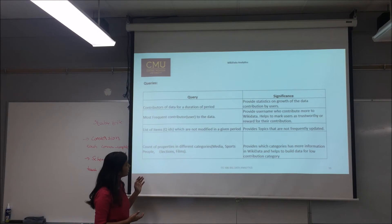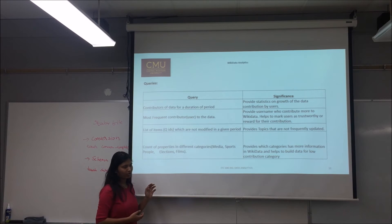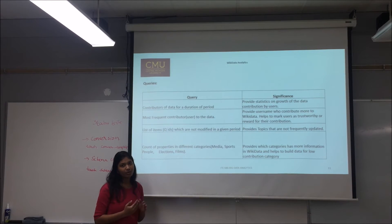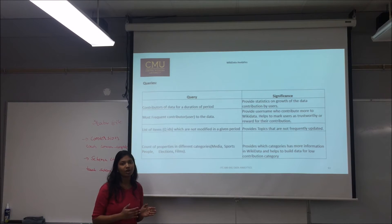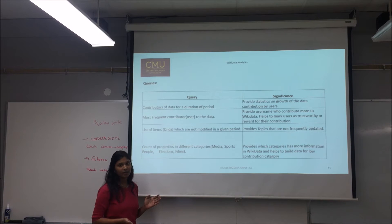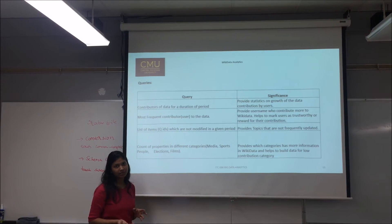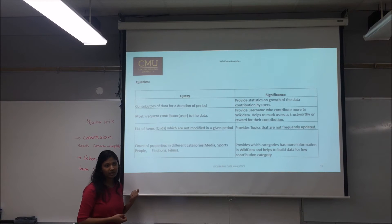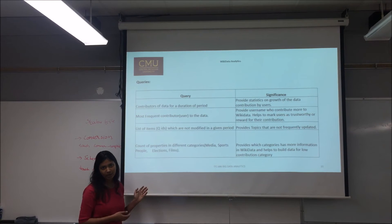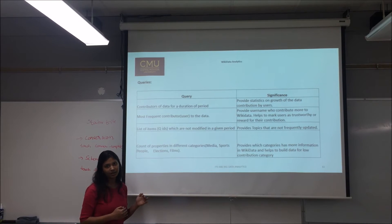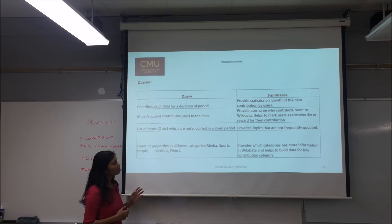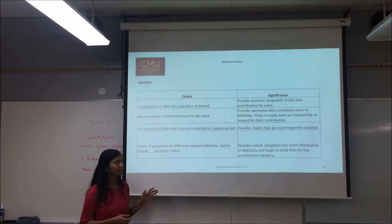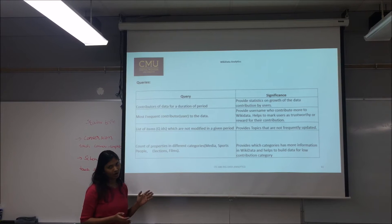The third query deals with a list of items not modified in a given period. For example, items not modified in 2016 would be treated as items not updated in 2016, giving insight into which items are the most current trending topics. The fourth query is the count of properties in different categories, giving the Wikidata organization statistics about which categories they need to work on and increase the data dump size for.